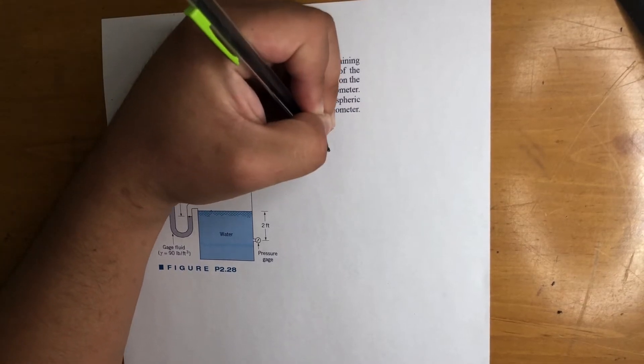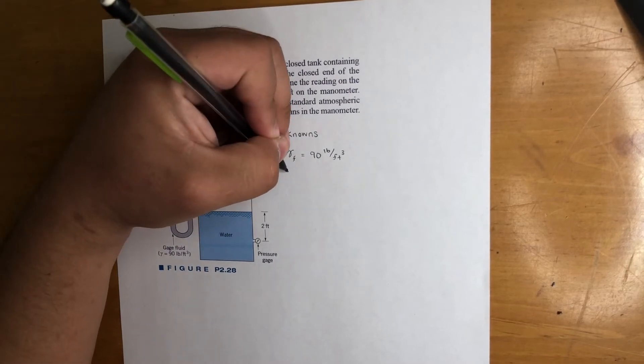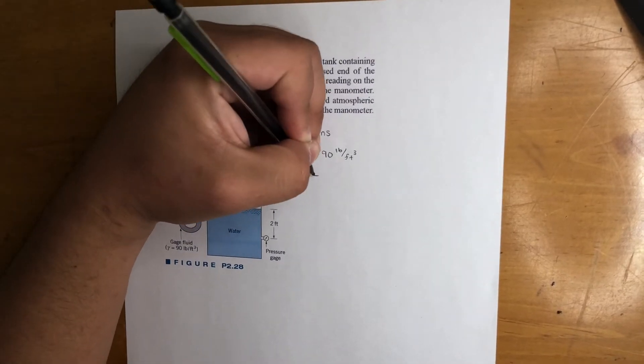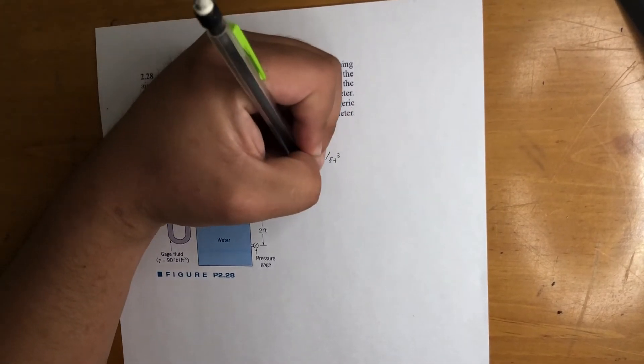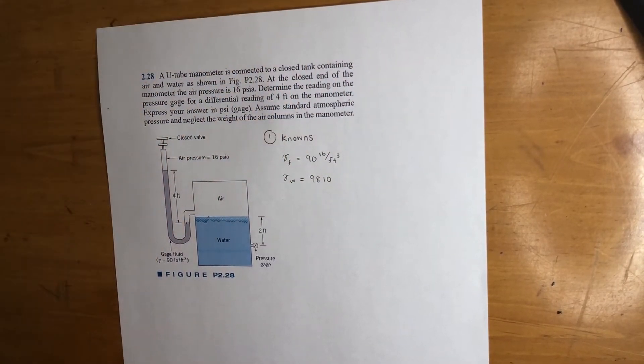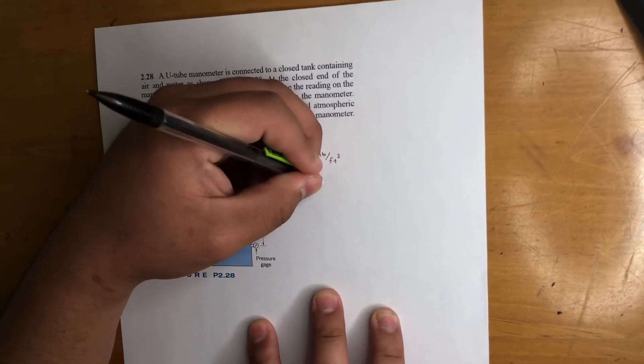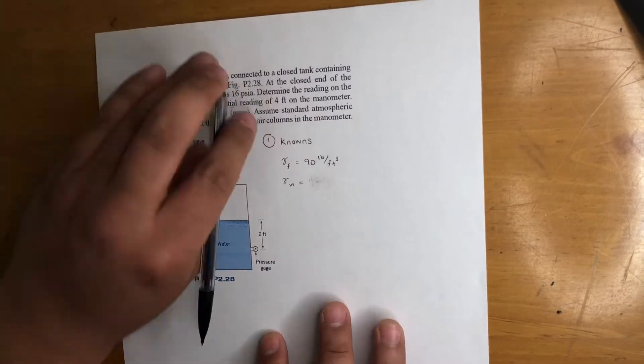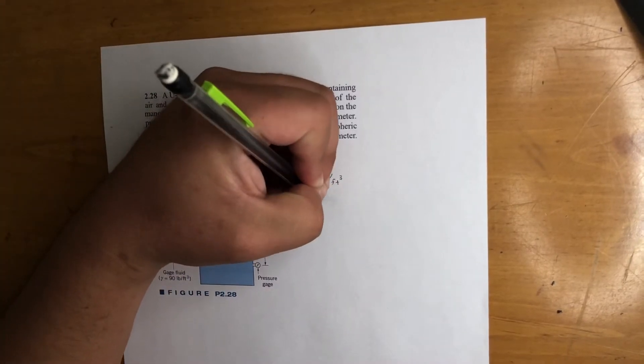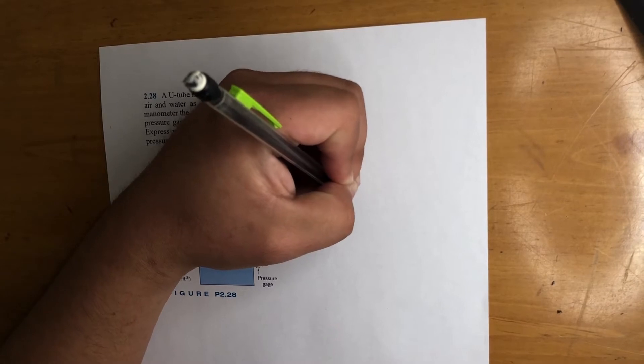We got gamma of water—you should know this. This is 9810... oh actually I'm sorry, we are in foot-pounds, so this is actually—this is newtons per cubic meter. We are actually 62.4 pounds per cubic foot.